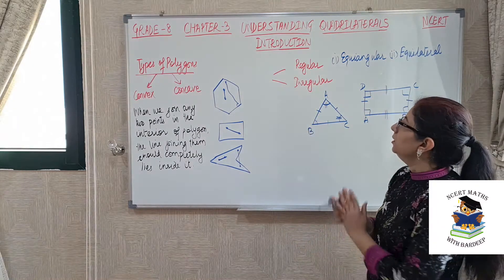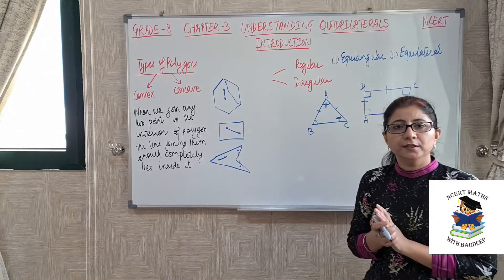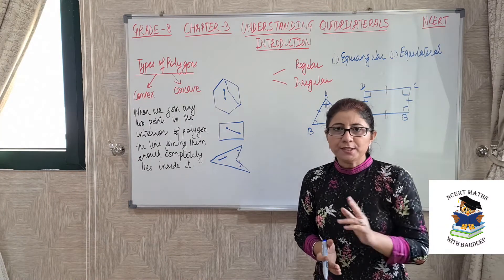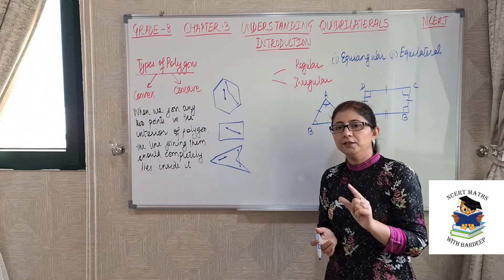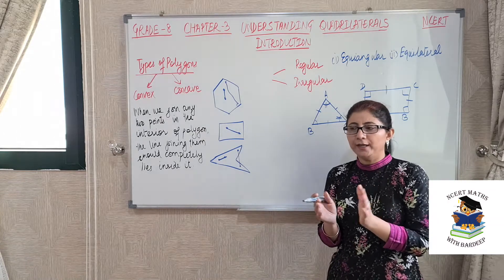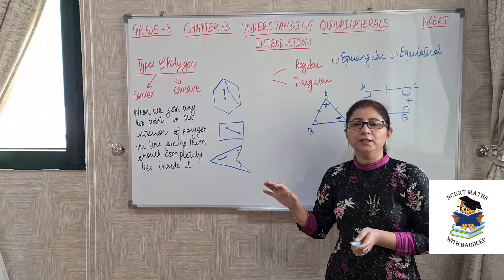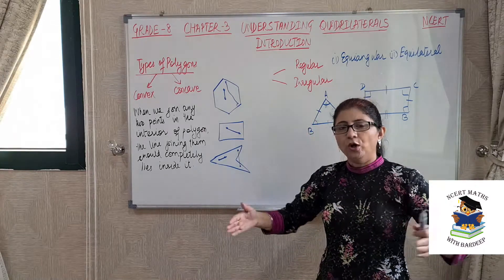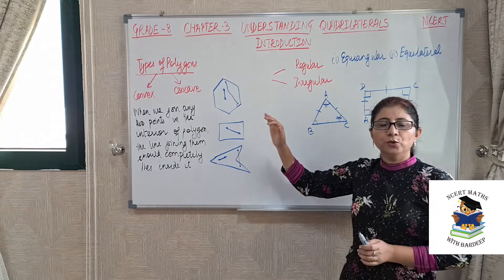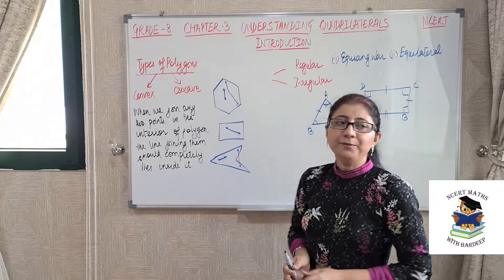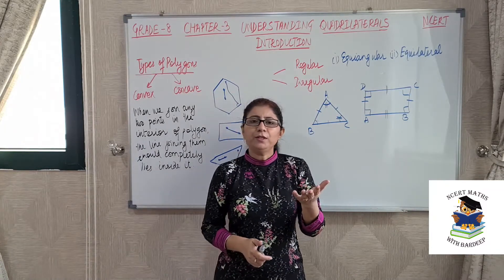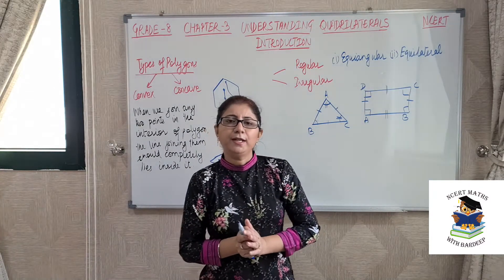Now convex polygons can be further differentiated into regular or irregular polygons. Regular polygons should satisfy two conditions: first they should be equiangular, and second they should be equilateral. Equiangular means all angles of the polygon should be same. Equilateral means all the sides of the figure should be of the same length. If any condition does not hold, that will be an irregular polygon. Let's see — this is an equilateral triangle. What are the properties? The length of all three sides of the triangle are equal.